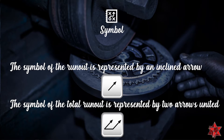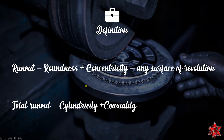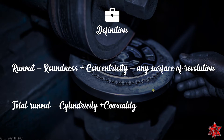Now we can see how runout is defined. Runout can be considered a consequence of roundness and concentricity combined, and can be applied to any surface of revolution at any cross section. So runout equals roundness plus concentricity at any surface of revolution. Total runout is represented by the difference between the maximum and minimum distance of a surface of revolution to the reference axis of rotation — that is, cylindricity plus coaxiality at the whole surface.